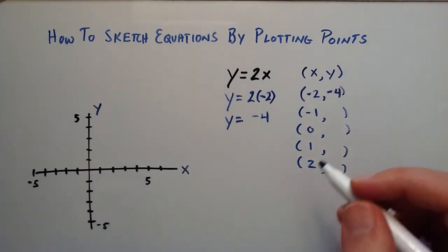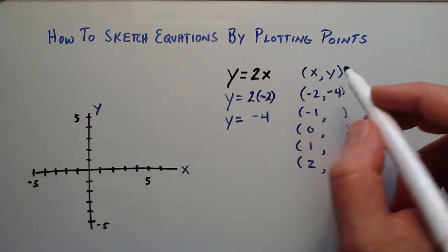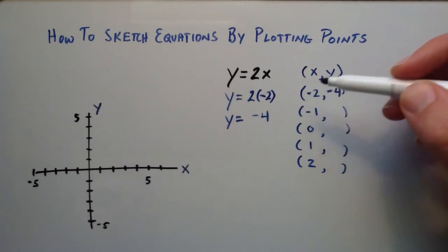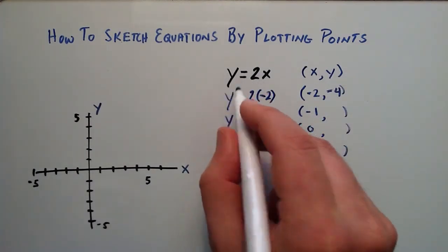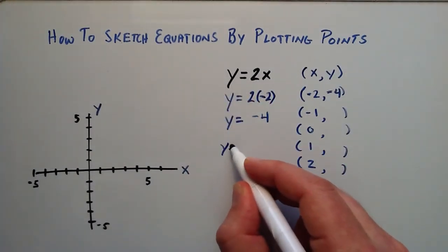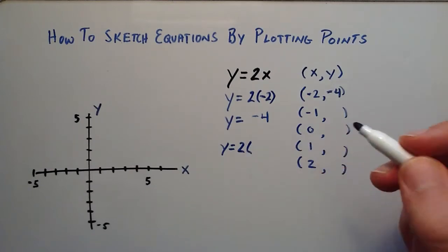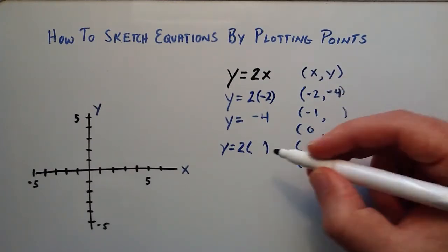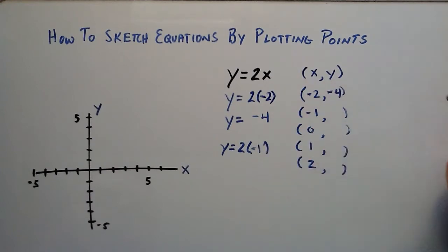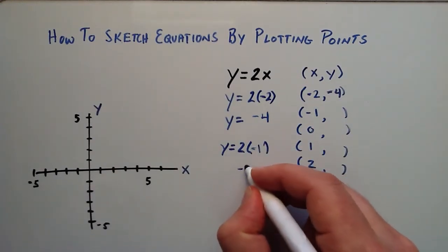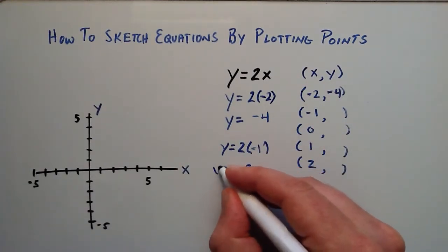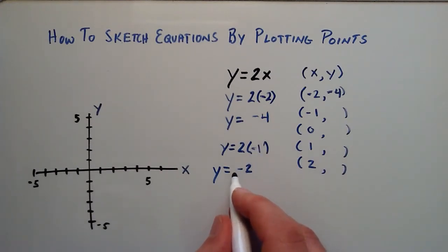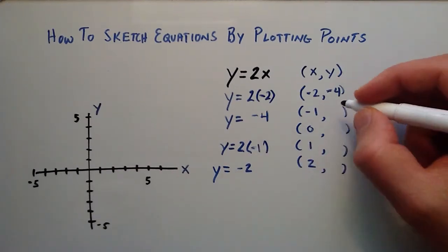Next, instead of negative 2, we look at x equals negative 1. Writing the equation again: y equals 2 times negative 1. So 2 times negative 1 is negative 2. When we had an x component of negative 1, we got a corresponding y component of negative 2.